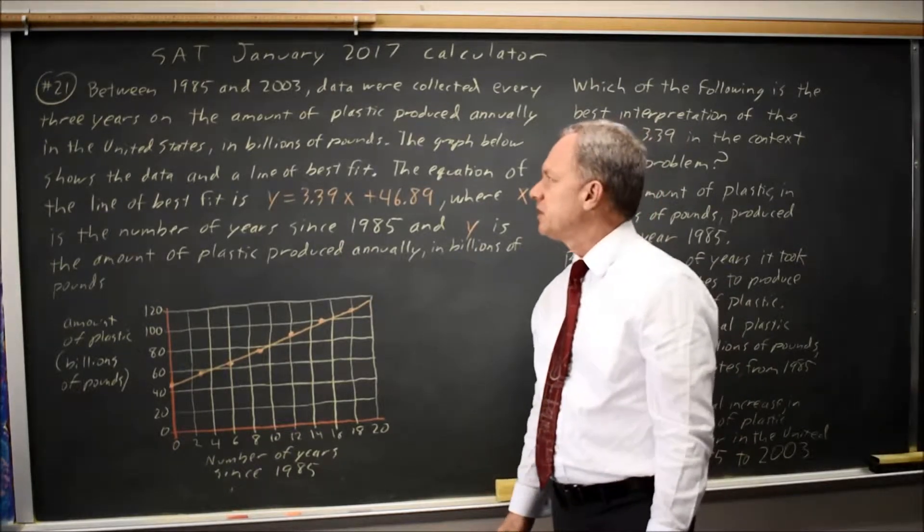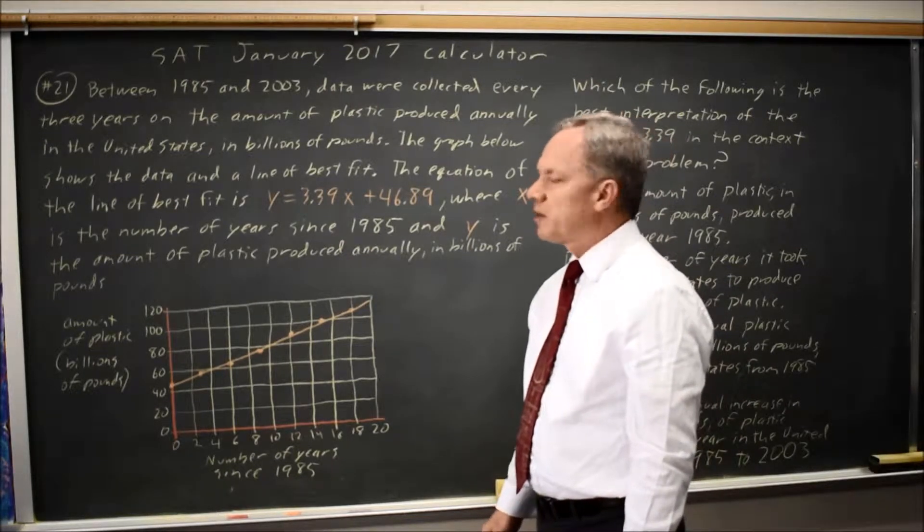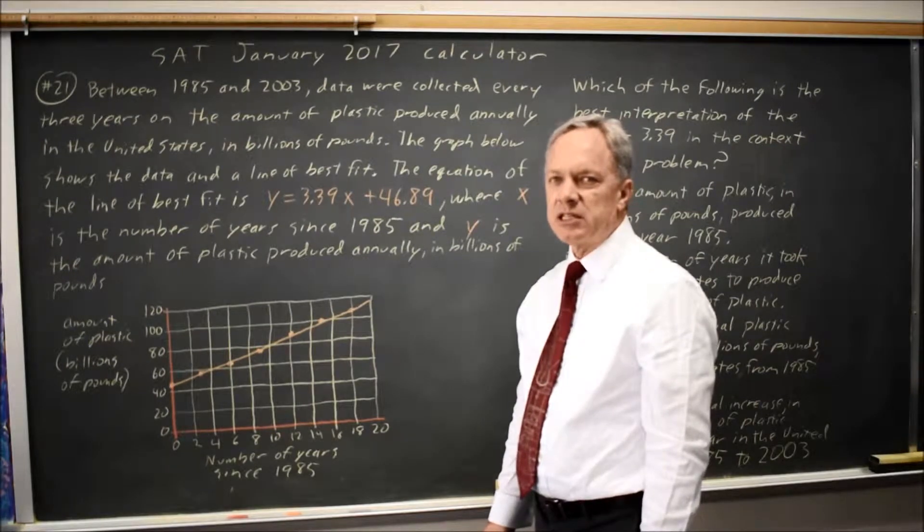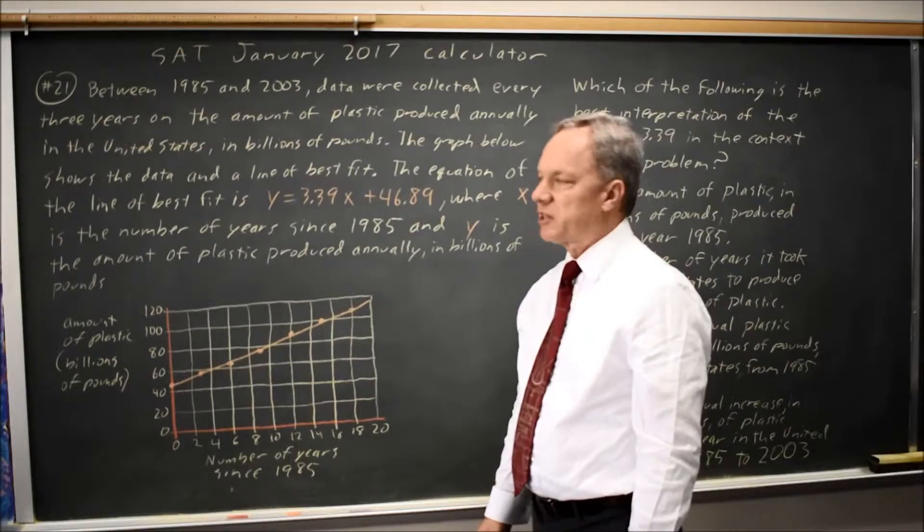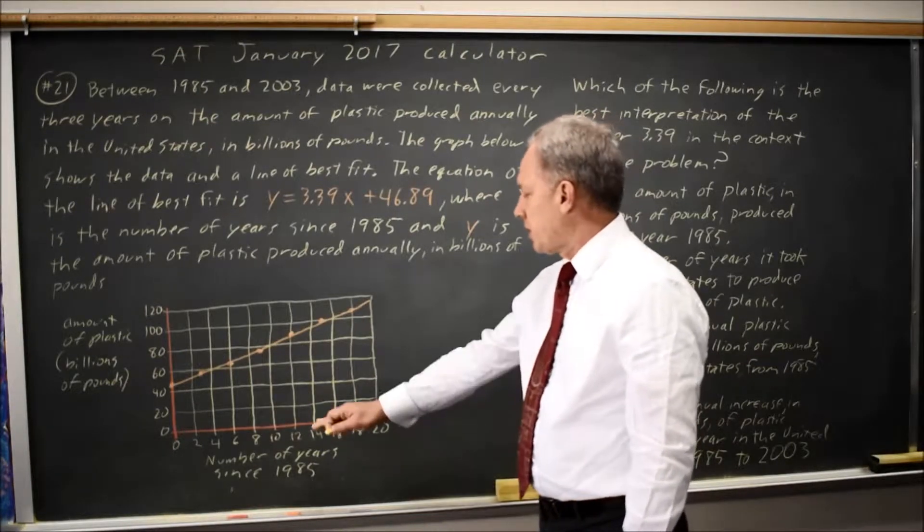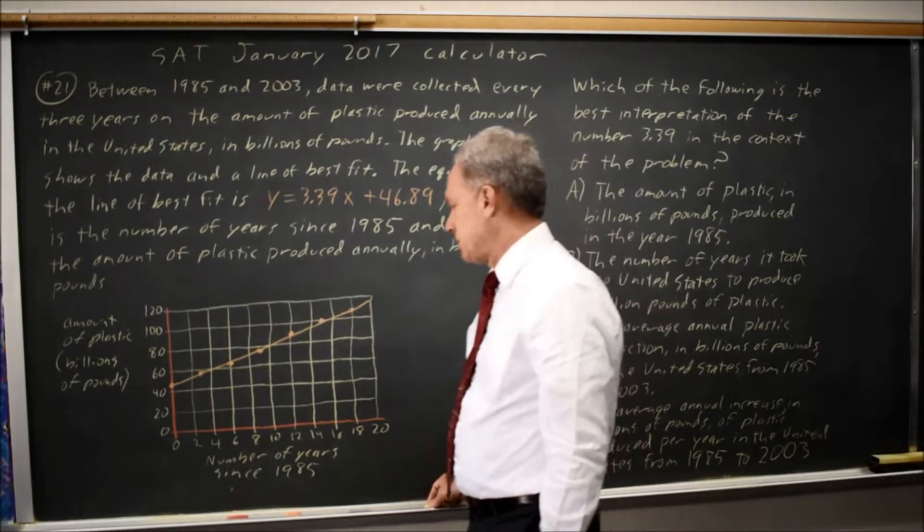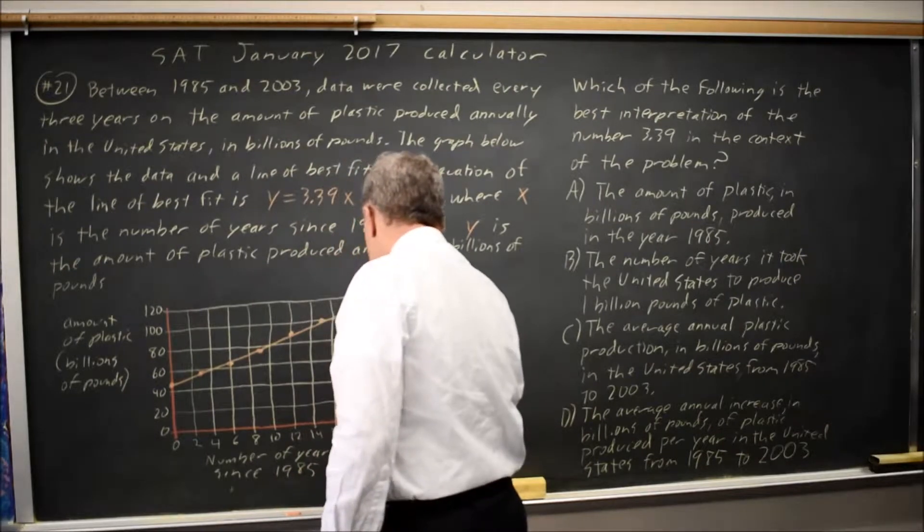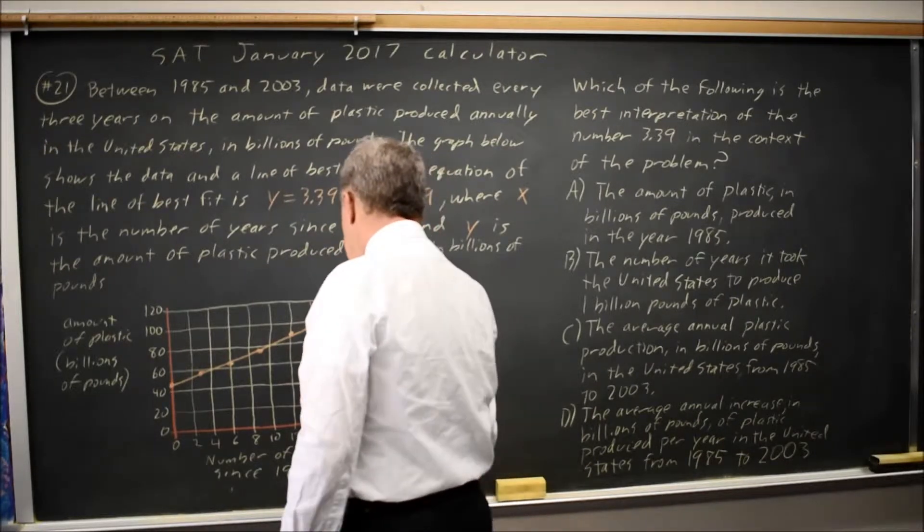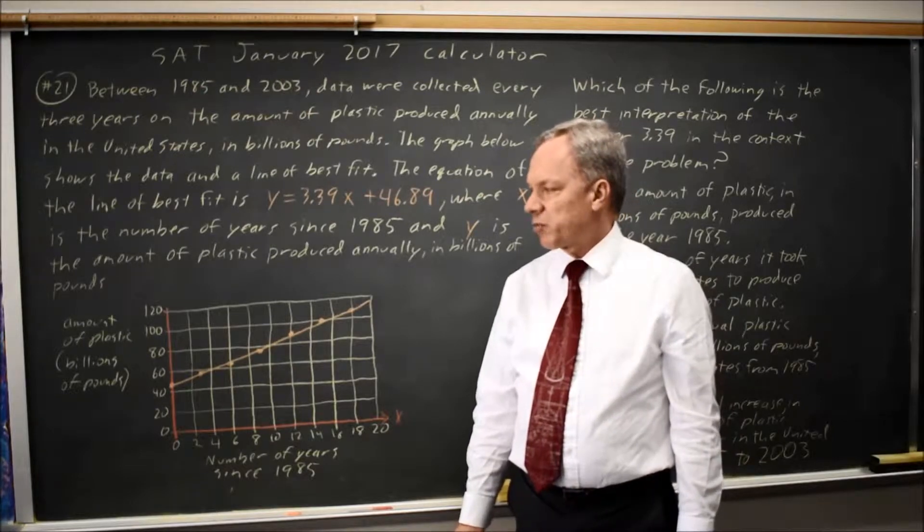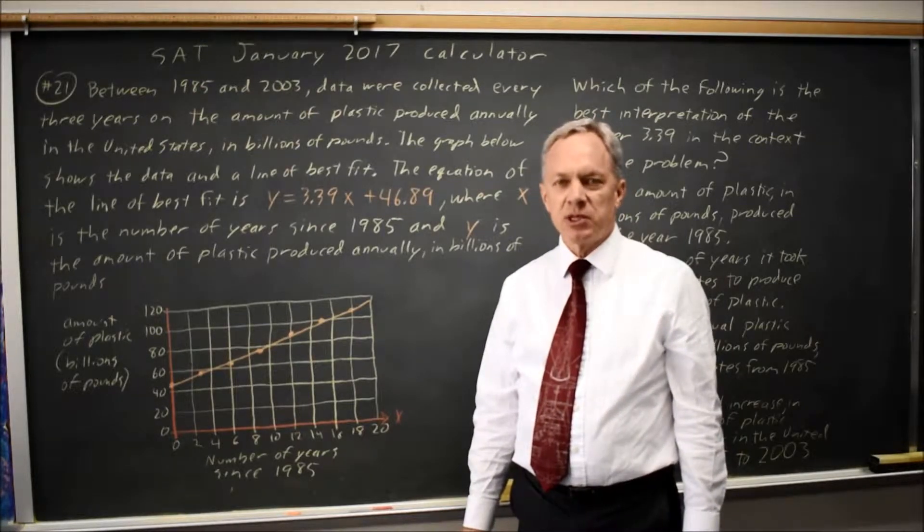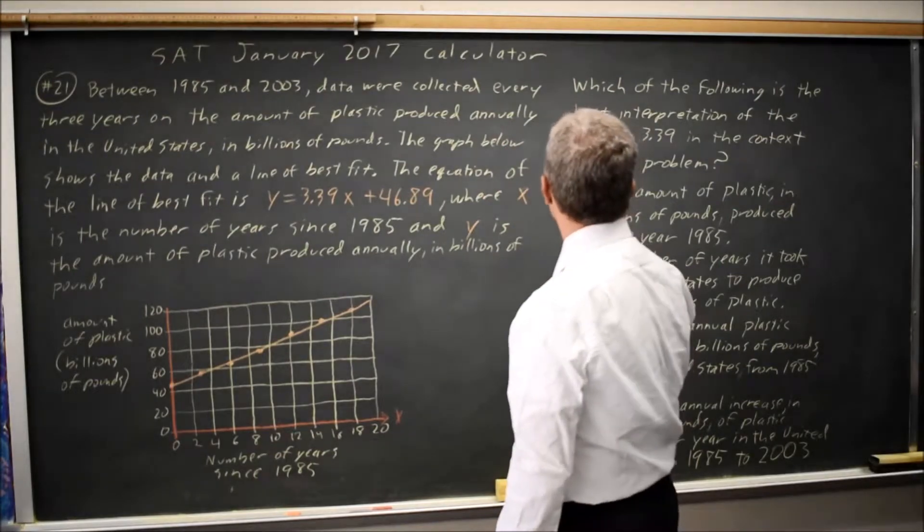To answer the question, we need to know the context. This is the amount of plastic produced in the United States in billions of pounds per year from 1985 to 2003, where the X axis, the horizontal axis, is number of years since 1985, and the Y axis, the vertical axis, is amount of plastic produced per year in billions of pounds.